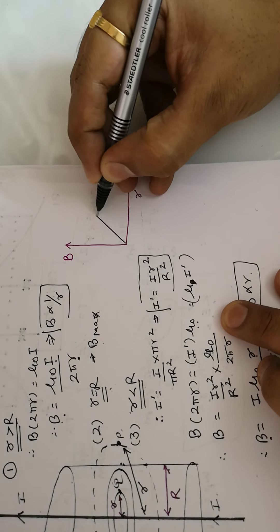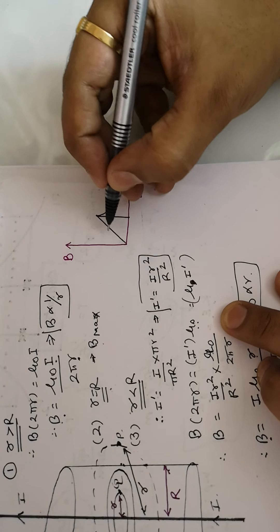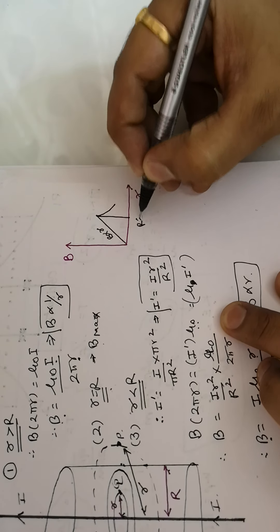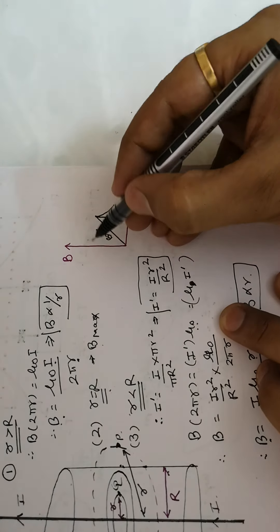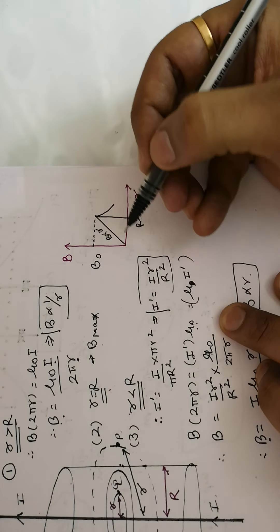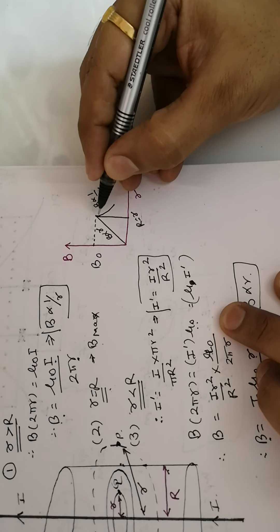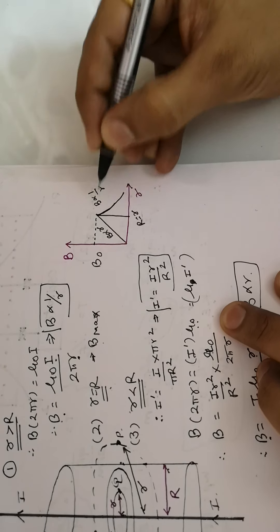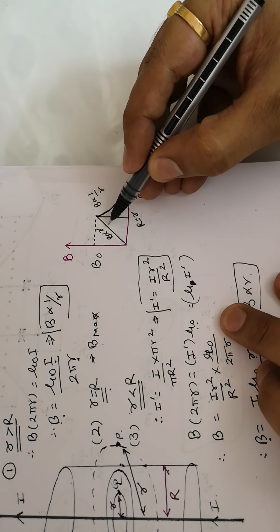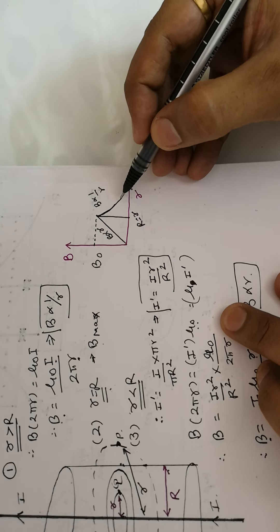We can draw a graph of B versus r. In the internal region (r less than R), B increases linearly — B is directly proportional to r. At the surface (r equals R), the field reaches its maximum value B naught. In the external region (r greater than R), the field is inversely proportional to r, giving a hyperbolic decrease.